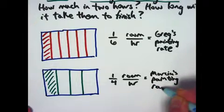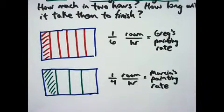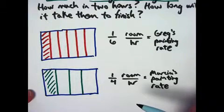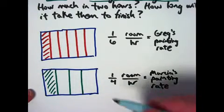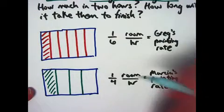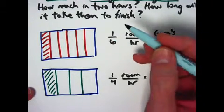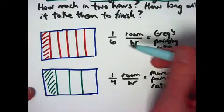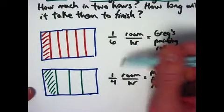If we add these two fractions together, that should make sense that that's going to give us their painting rate when they work together. And as in the previous video, you get a common denominator to do this, to add these together. Should that common denominator be 24? Well, it could be 6 times 4, but you can actually get away with 12 in this case.